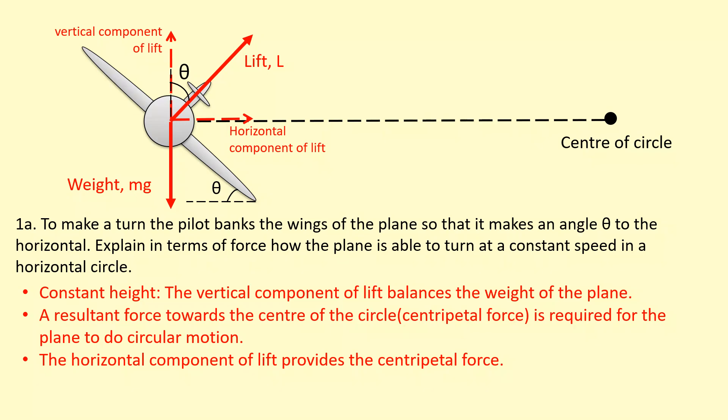Another way to think about this is if you add the forces tip to tail like this—lift and weight—in any order, you get a resultant force. You can see the shape isn't closed. The resultant force is towards the right, and that is the horizontal component of the lift here, and that's providing the centripetal force.